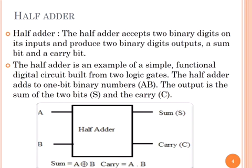Half adder. The half adder accepts two binary digits on its inputs and produces two binary digits outputs, a sum bit and a carry bit. The half adder is an example of a simple functional digital circuit built from two logic gates. The half adder adds two one-bit binary numbers A and B. The output is the sum of the two bits S and the carry C.